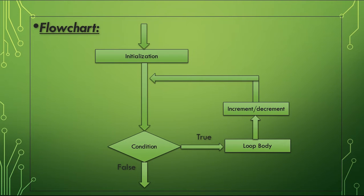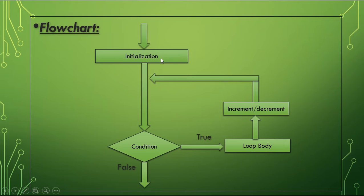Now the flowchart — how the for loop actually works. The number of iterations depends upon the initialization, condition, and increment/decrement parts. The initialization part executes only once when the control enters the loop. After initialization, the given condition is evaluated.